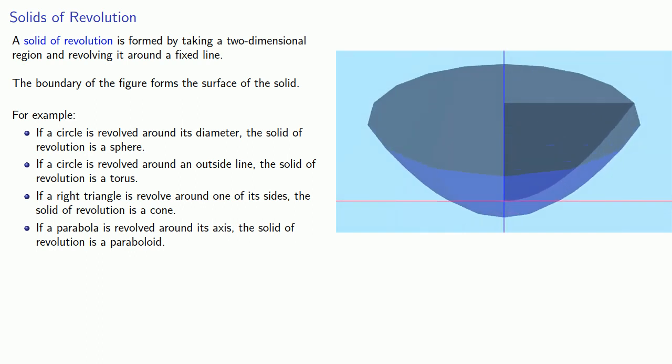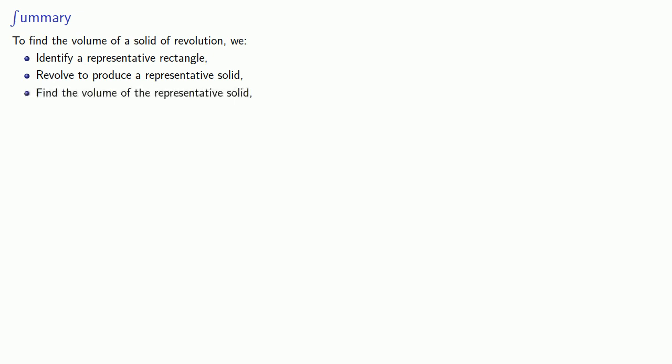And in general, we can take any region and revolve it around any line to produce a solid of revolution. To find the volume of a solid of revolution, we identify a representative rectangle, revolve it to produce a representative solid, find the volume of the representative solid, and then sum the volumes through integration.